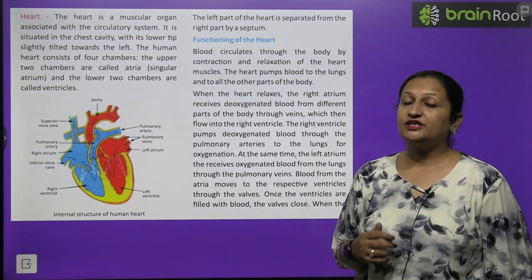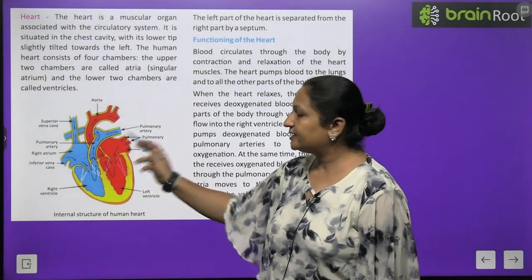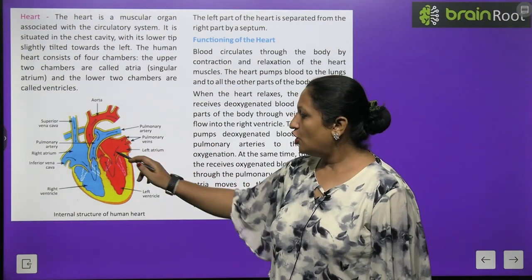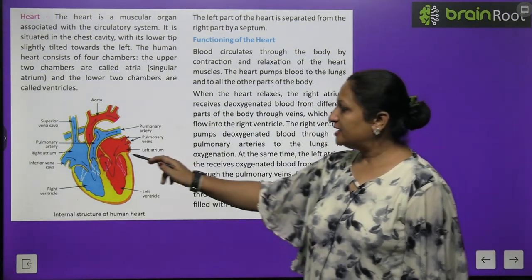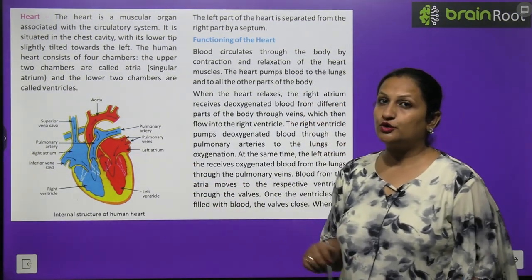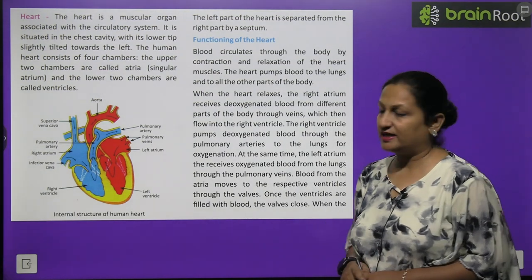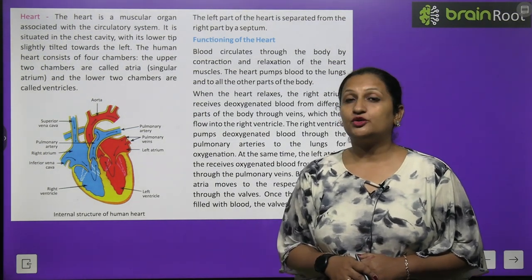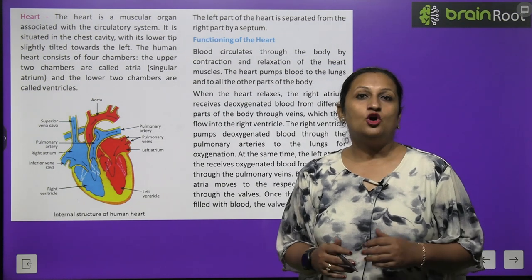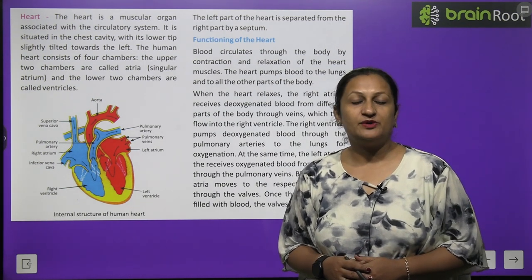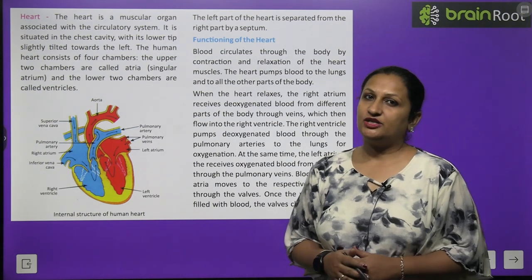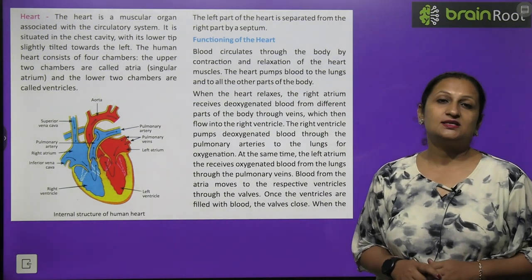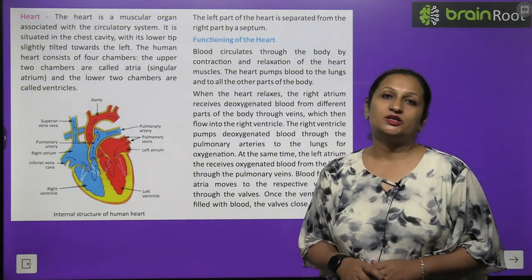Purified oxygenated blood from the lungs arrives at the left atrium via the pulmonary vein. Walls open, and blood flows into the left ventricle. Walls then close to prevent backflow. From the left ventricle, oxygenated blood is distributed to the entire body through the largest blood vessel called the aorta. The aorta branches into arteries that carry blood to different parts. This is why the human circulatory system is called double circulation.